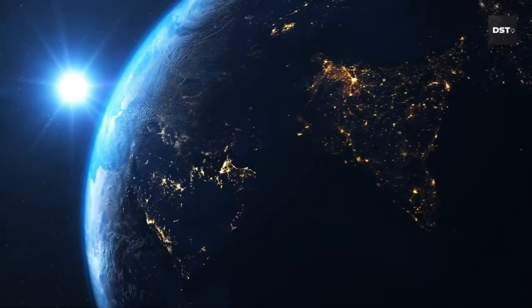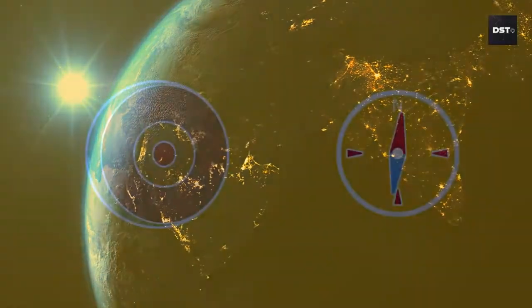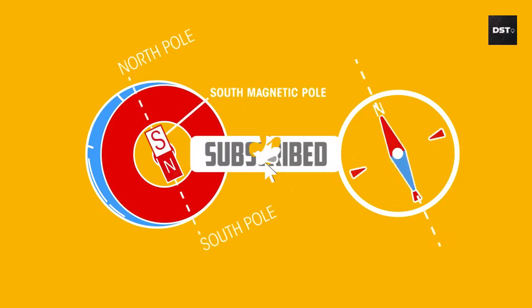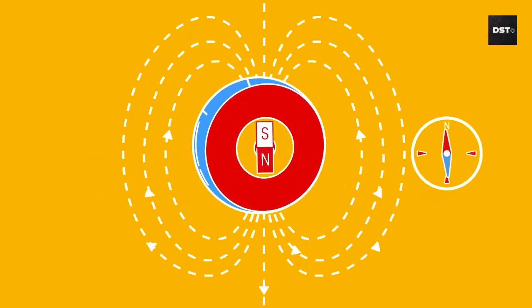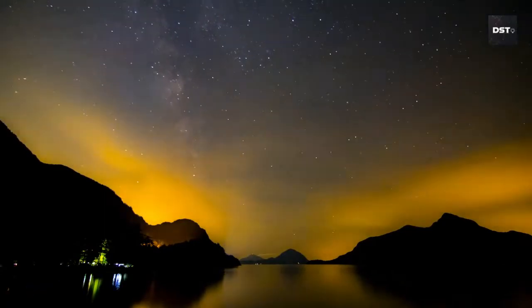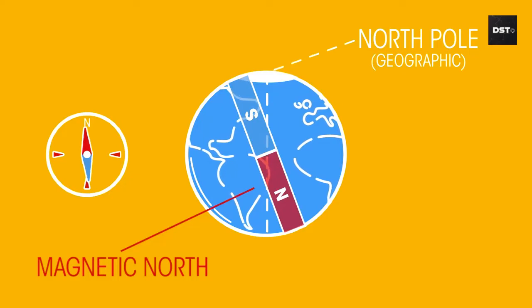Same as this setup, our very own Earth does the same thing — it also has a magnetic field. Earth's magnetic field, also known as the geomagnetic field, is the magnetic field that extends from Earth's interior out into space, where it interacts with the solar wind, a stream of charged particles emanating from the sun.